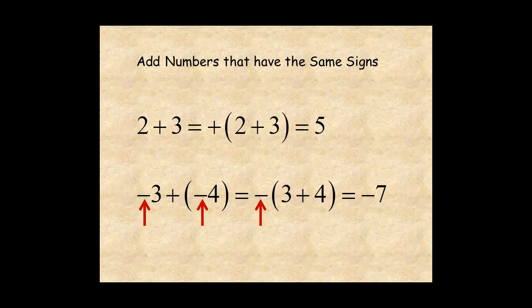Second, the absolute value of the sum is the sum of the absolute values of the two numbers. So 5 is 2 plus 3, and 7 is 3 plus 4.